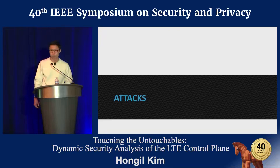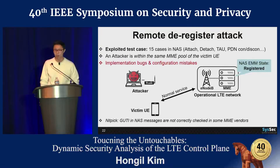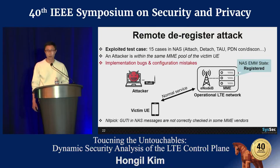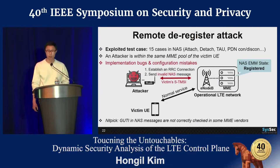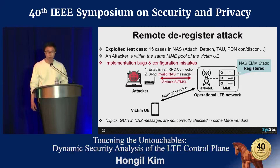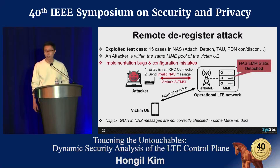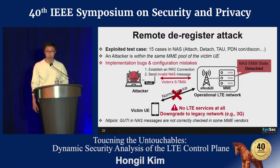I'll introduce one attack scenario we validated with the carriers: the remotely triggered deregistration attack. The attacker exploits one of 15 vulnerable cases in the NAS procedure. The victim UE is normally registered to the operational network. The attacker makes an RRC connection impersonating the victim UE and triggers an invalid NAS procedure using the victim's identity. The operational network then thinks something went wrong and changes the victim UE's state from registered to detached, so the victim cannot receive any LTE service and eventually downgrades to a legacy network such as 2G or 3G.